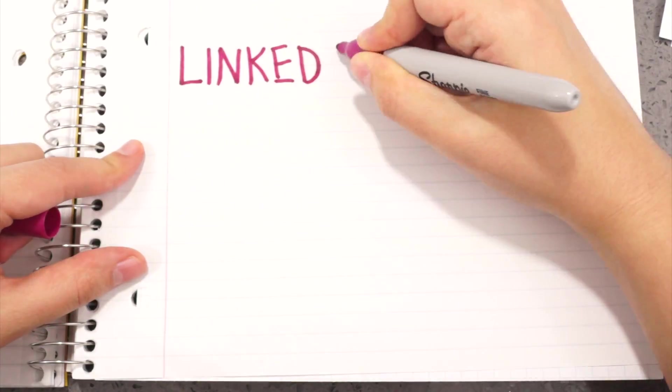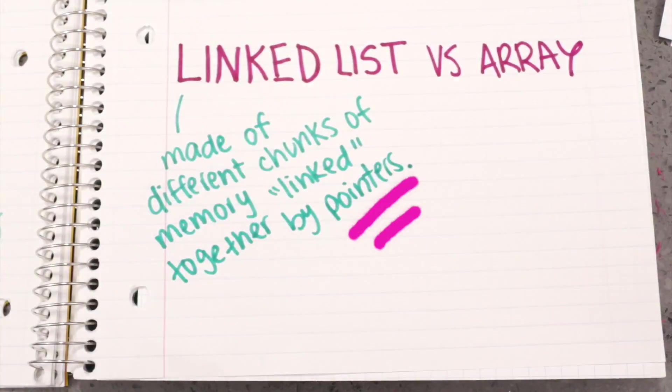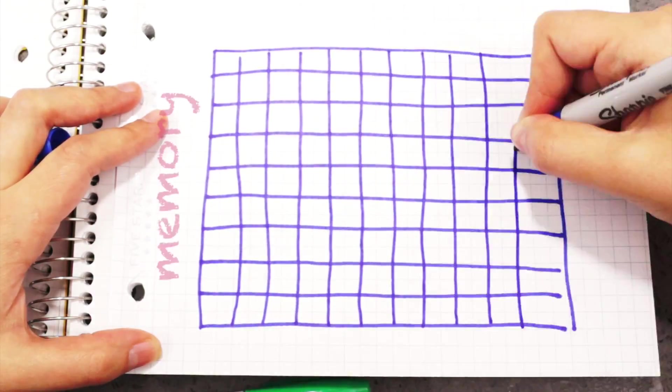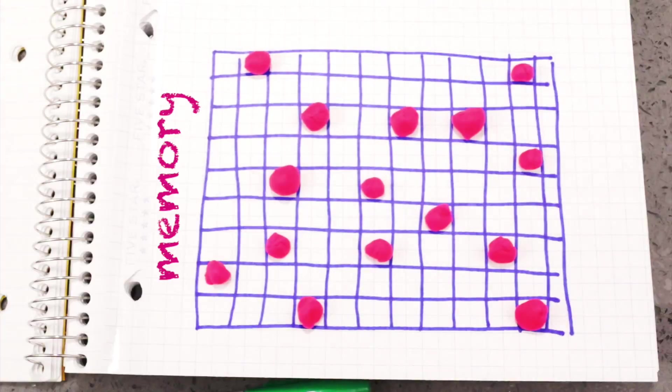Let's compare linked lists and arrays. A linked list is made of different chunks of memory linked together by pointers. Let's suppose this grid is memory, and each pink blob is data. This is how a linked list will look in memory.